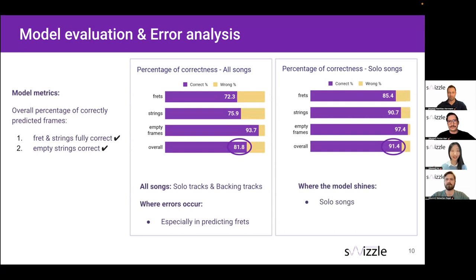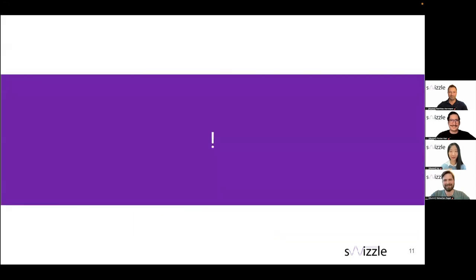And in comparison, as already shown on the left hand side, you can see where the Swizzle model shines. So if we only train on the solo songs, we achieve a much better overall correctness of 91.4%. Impressive, right? Now, you must be excited to see this Swizzle app. So we have a big explanation mark for your attention. And from here, Matthias will take over and show you the magic of Swizzle app.